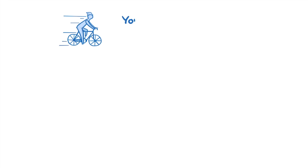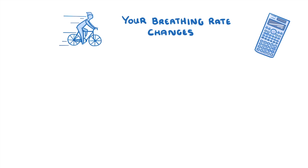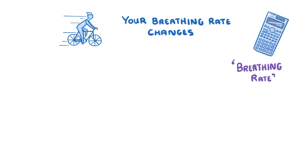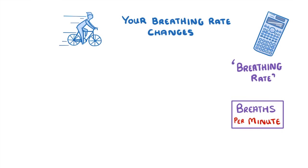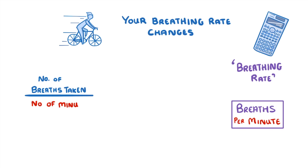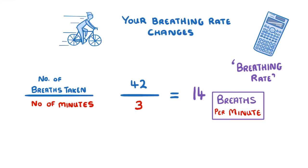You've probably noticed that when you exercise your breathing rate changes, and you could be asked to calculate this breathing rate and give your answer in breaths per minute. It's a pretty easy equation — you just divide the number of breaths taken by the time in minutes that those breaths took. So if you took 42 breaths in 3 minutes, your breathing rate would be 14 breaths per minute.